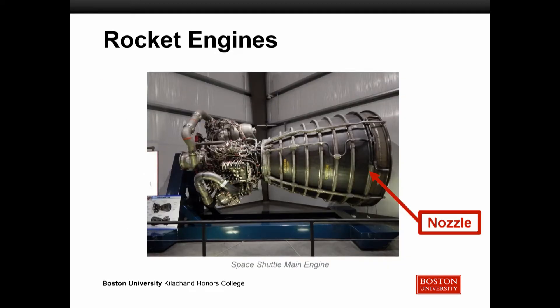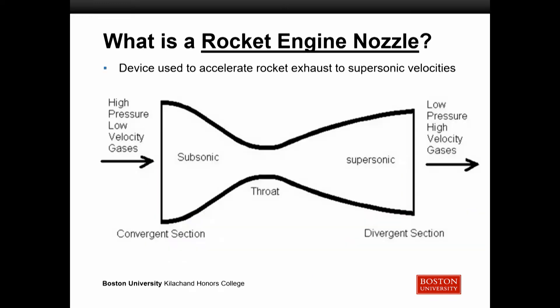Here's an example of a rocket engine — the Space Shuttle Main Engine. What I want you to pay attention to is the bell-shaped portion to the right. This is the rocket engine nozzle, and this is what we're going to be focusing on. A rocket engine nozzle is a device used to accelerate rocket exhaust to supersonic velocities. You're taking high-pressure, low-velocity gases, exploiting some fluid dynamics, and accelerating them to low-pressure, high-velocity gases.